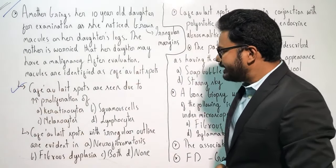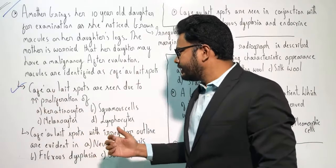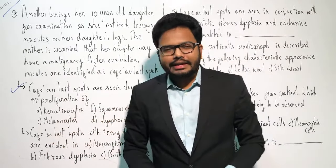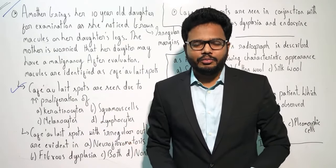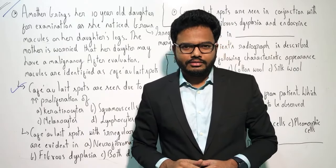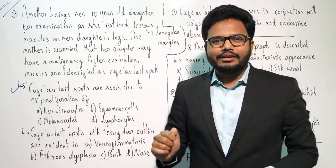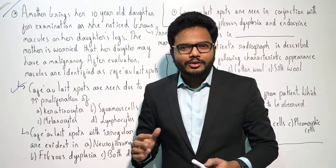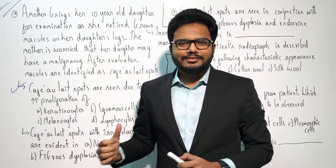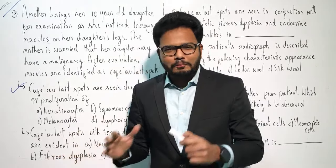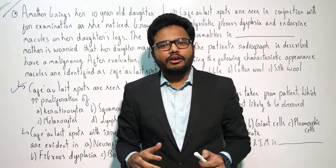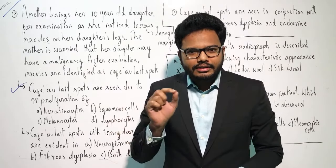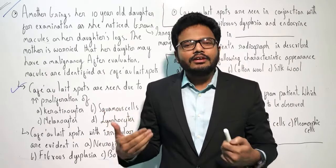Question one: Café-au-lait spots are seen due to increased proliferation of which of the following? The answer is melanocytes — specifically, increased proliferation of melanocytes in the basal layer of the epidermis, leading to increased melanin formation. So do make a note: it is melanocytes in the basal layer of the epidermis.